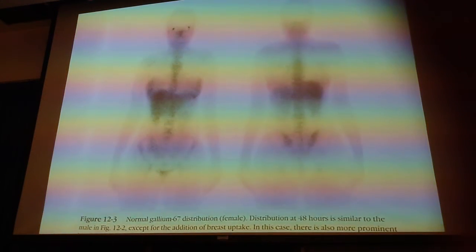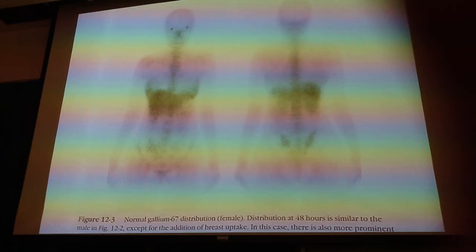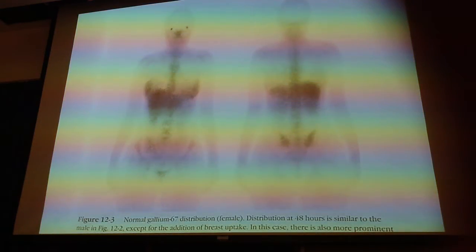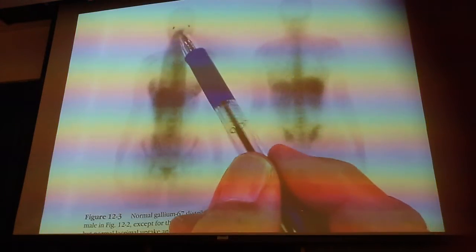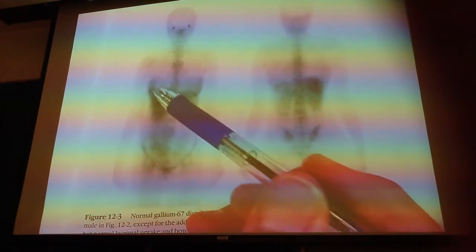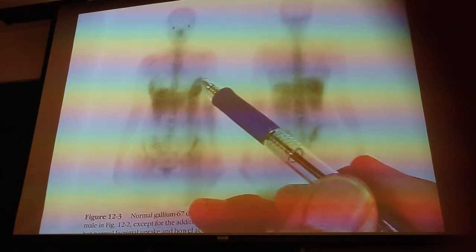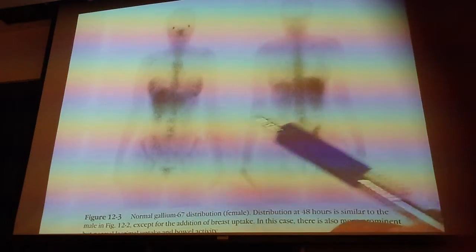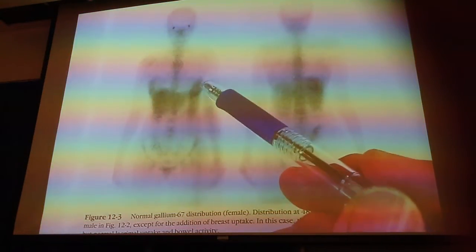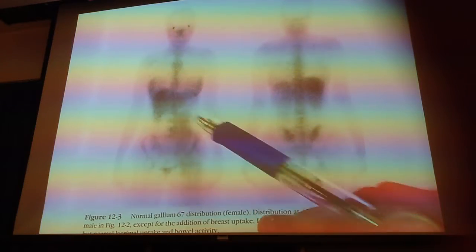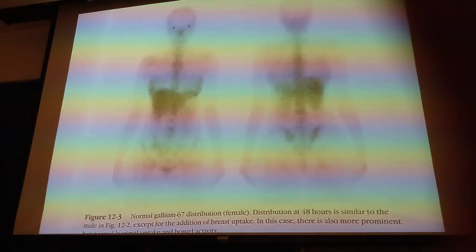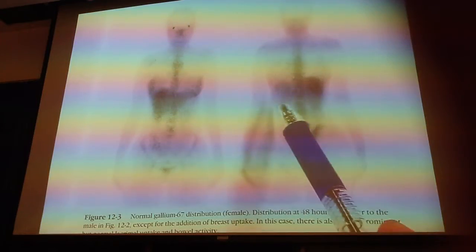Here's a typical gallium scan. You see the lacrimal glands, you normally see sinus activity. Sometimes you'll see activity in the breasts, especially if the woman is lactating. You'll also see liver, bone marrow, and the kidneys.